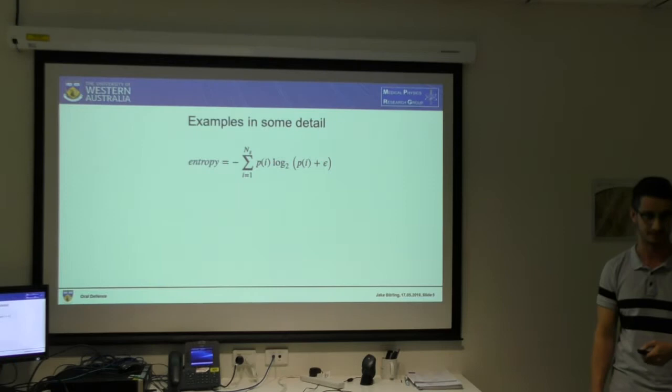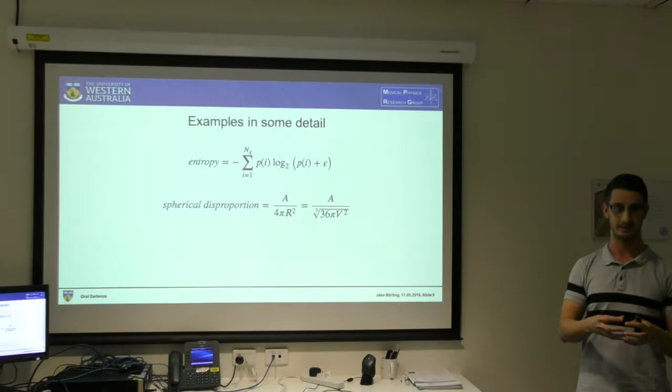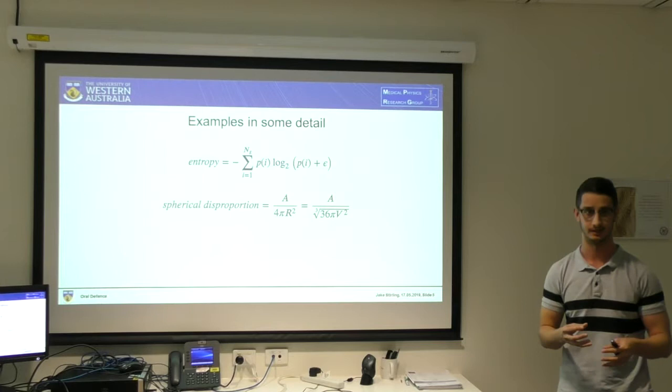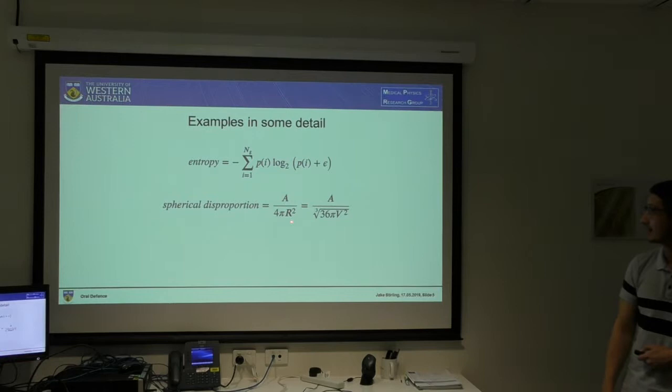Spherical disproportion is a shape-based feature that tells you how much the tumour varies from an ideal sphere — the less ideal, the more aggressive it is. That's another way to predict prognosis. Here, A is the surface area of the tumour of interest, and R is the radius of a sphere that would have the same volume as that tumour.